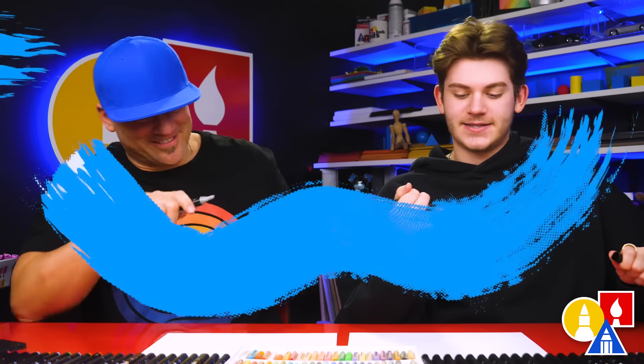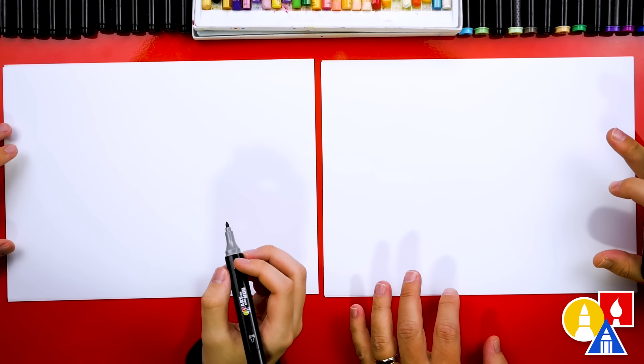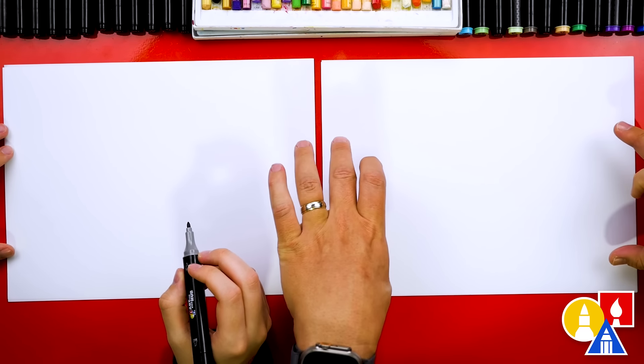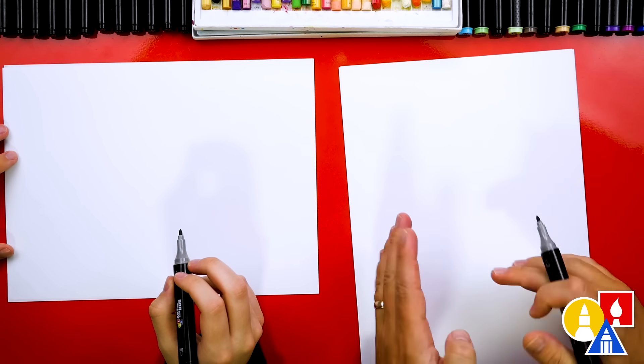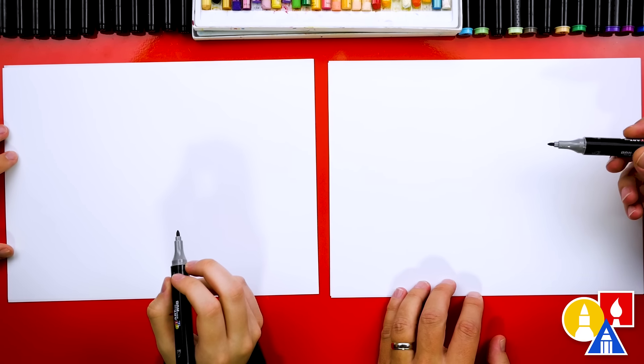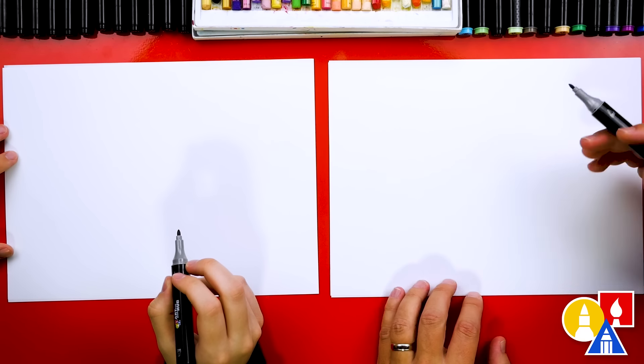You ready to start? We're starting with our paper horizontal, and this is so that we can get the full cityscape in our paper. You could draw it this way, but it will be really short. We're using our markers to draw with, but you can use whatever you have at home or in the classroom.